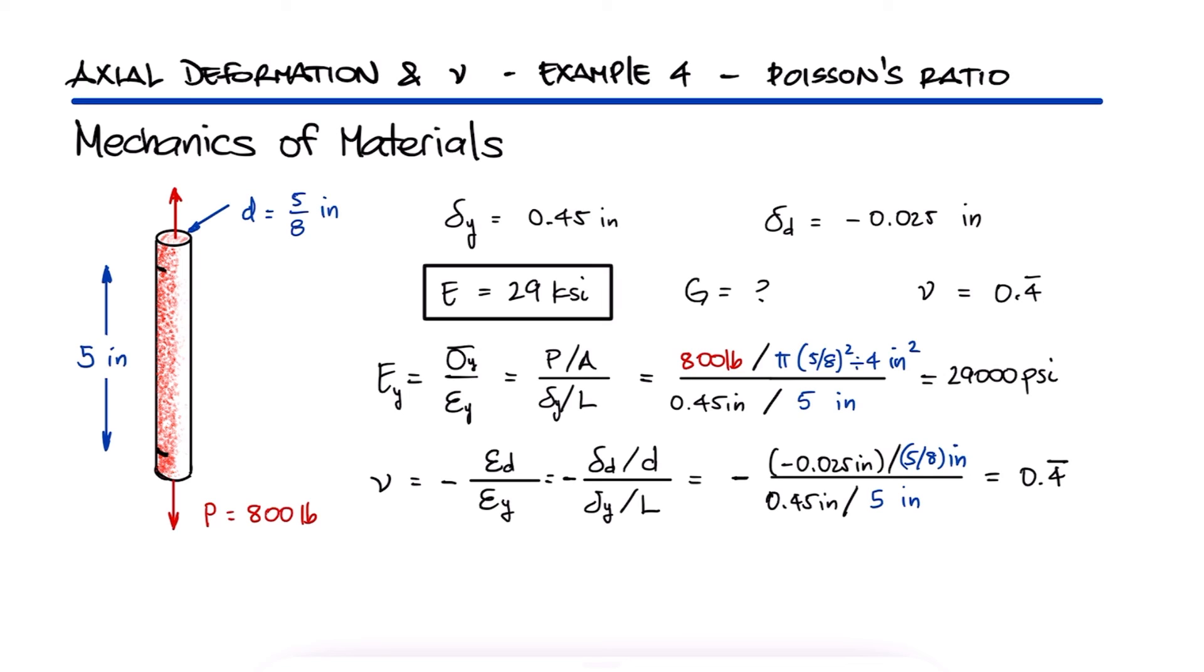And finally, with the expression that we used in the main video and the values that we just found for the elastic modulus and Poisson's ratio, we find a shear modulus close to 10 KSI. For one more example on axial deformation,